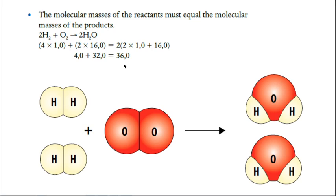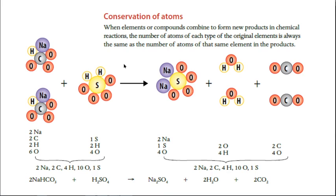Here's a more interesting example: bicarb (NaHCO3) and sulfuric acid (H2SO4). If you balance the equation, you need two bicarbs to one sulfuric acid, going to sodium sulfate plus water plus carbon dioxide gas. If you add the state symbols: reactants are aqueous, water is liquid, and CO2 is gas — so this would be a formation of a gas.